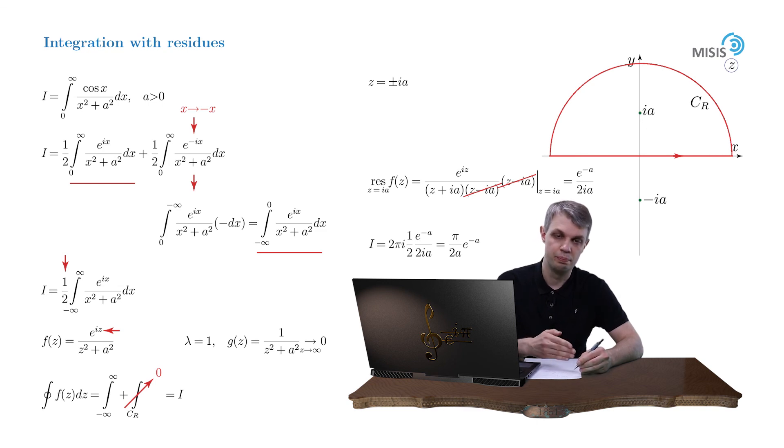And second, we need to stretch the contour so it goes from minus infinity to plus infinity. Only under this condition will we be able to close the contour with upper or lower semicircles.